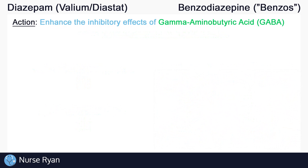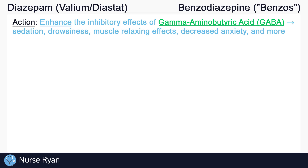Benzodiazepines like diazepam work by enhancing GABA. So diazepam enhances the main downer of the nervous system, which results in all sorts of inhibitory effects throughout the body, including sedation, drowsiness, decreased anxiety, muscle relaxing effects, and much more.